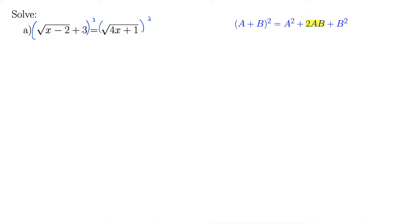Here I'm calling square root of x minus 2 a and 3 b. So when we square that out, we get a squared, x minus 2, plus 2ab, so 2 times 3 is 6 radical x minus 2, plus b squared, plus 9. All that equals, well this is nice over here, the square just undoes the square root, so we have 4x plus 1.